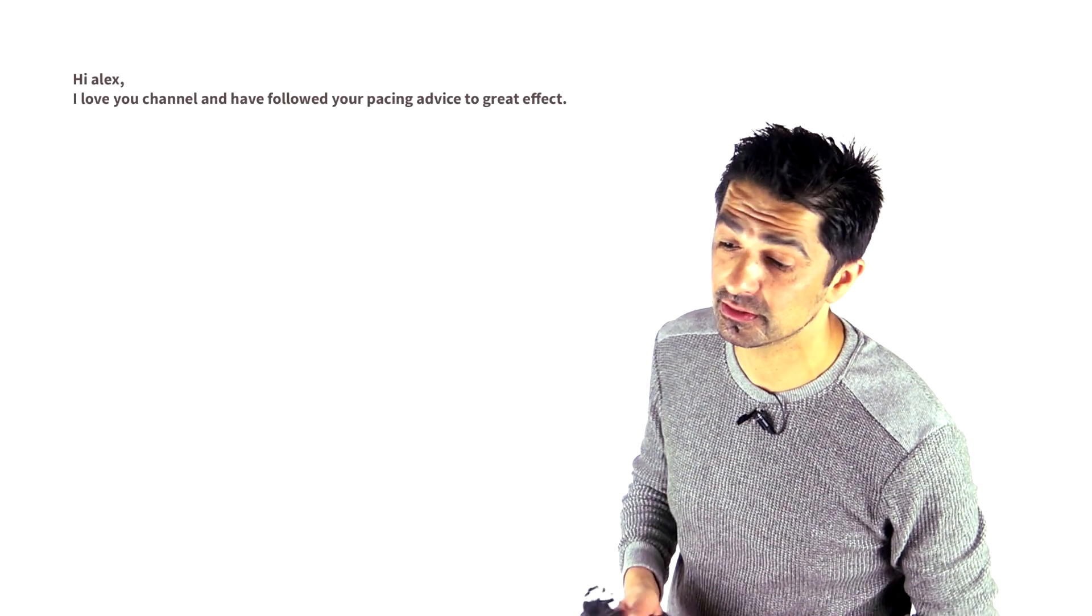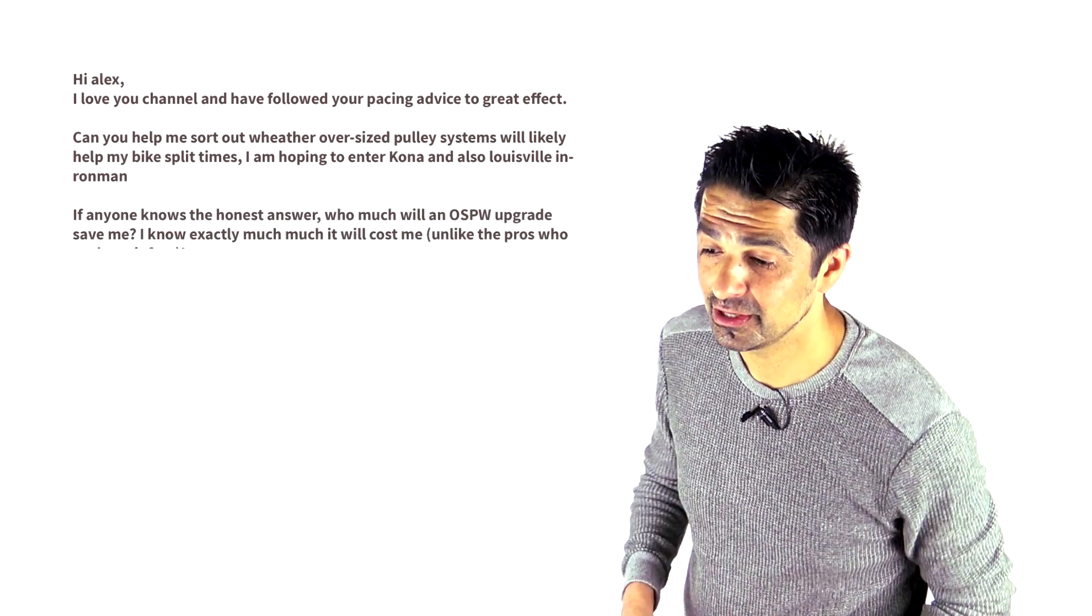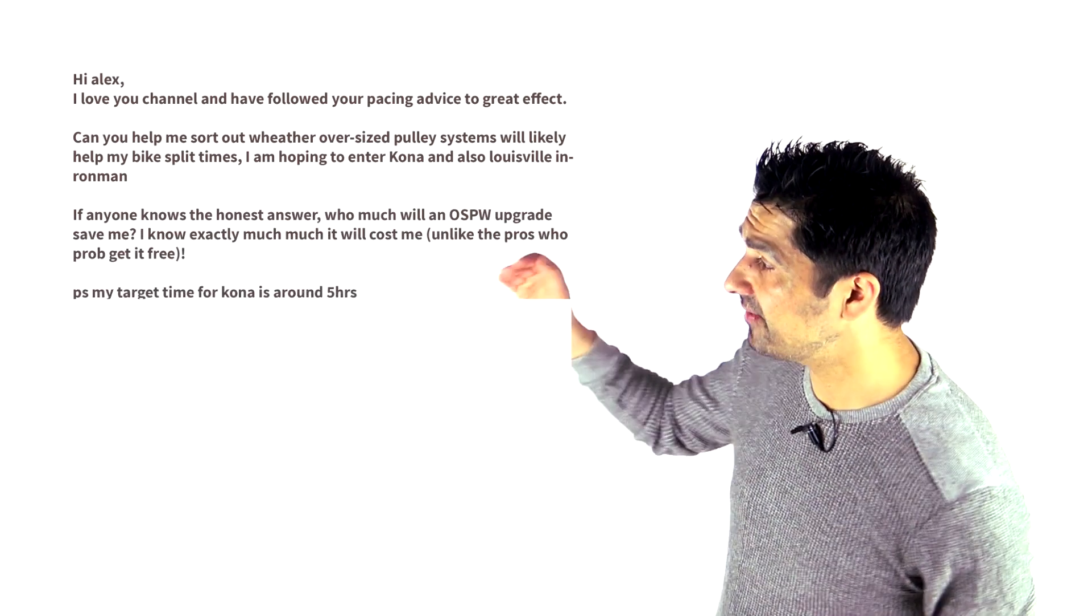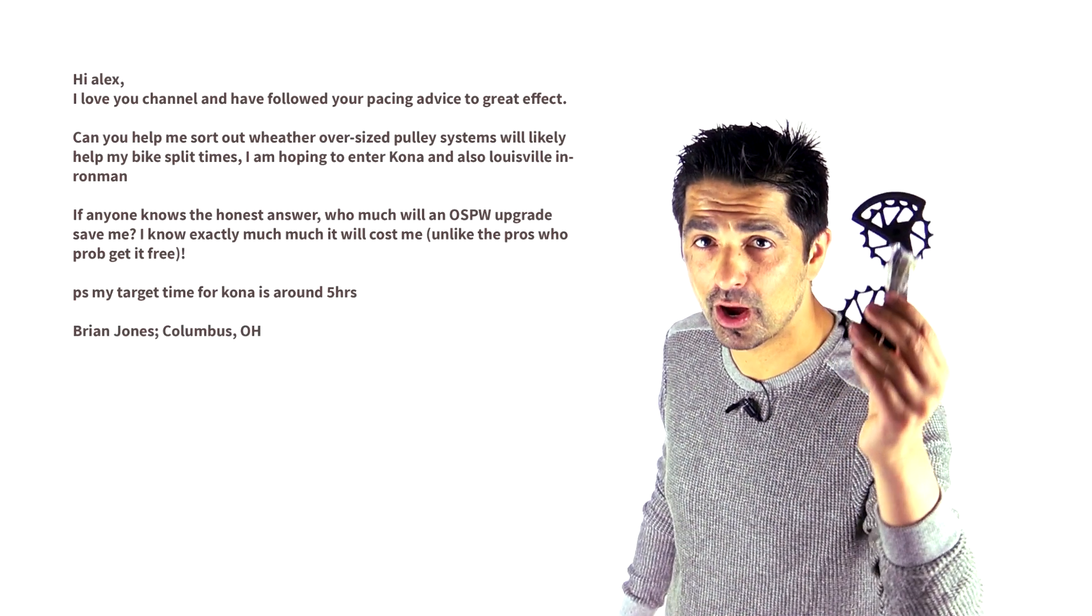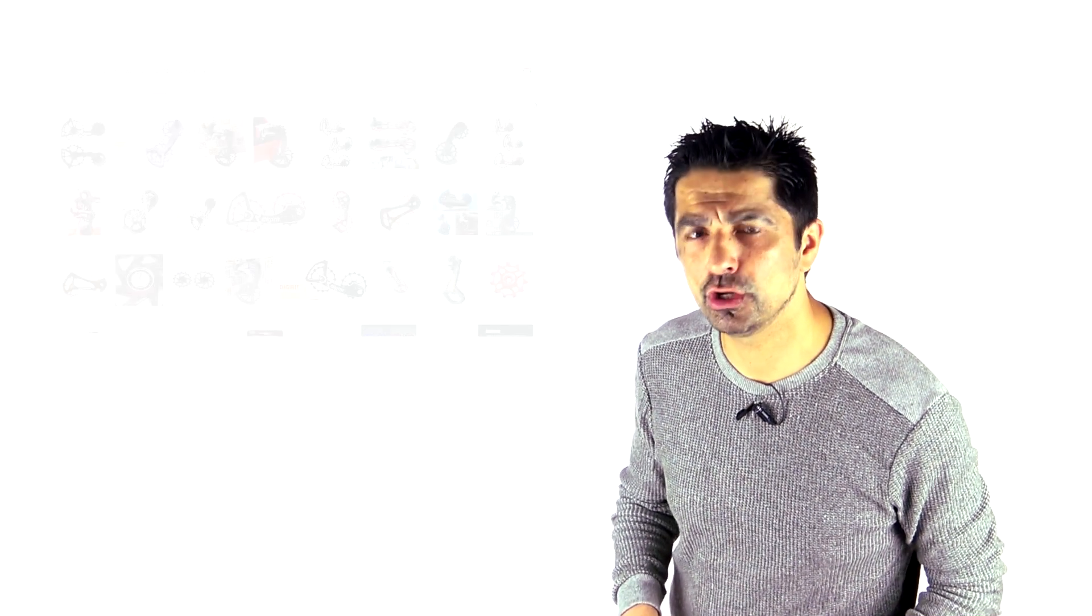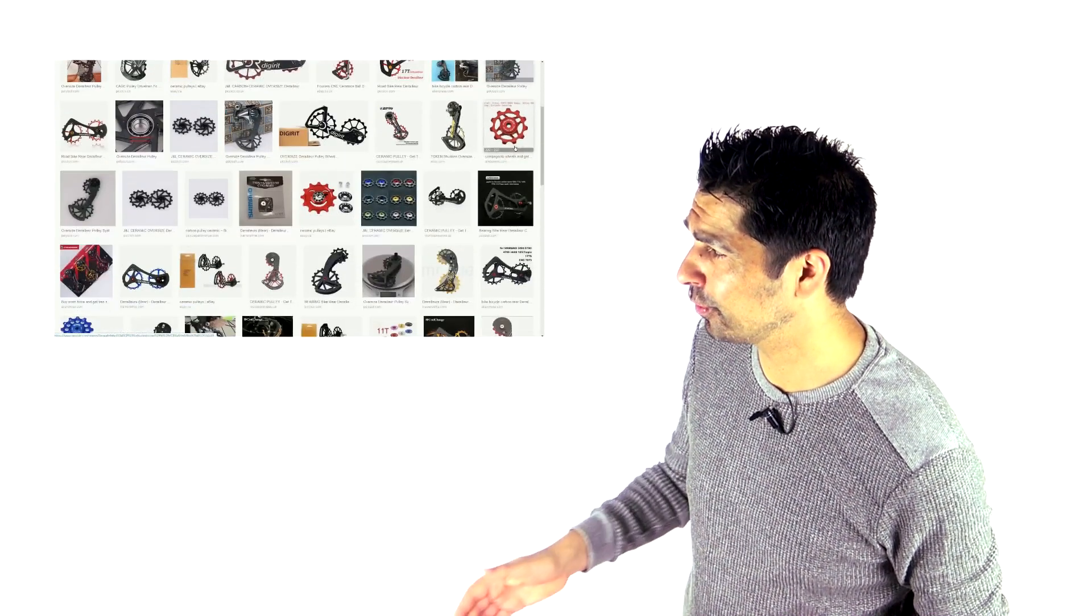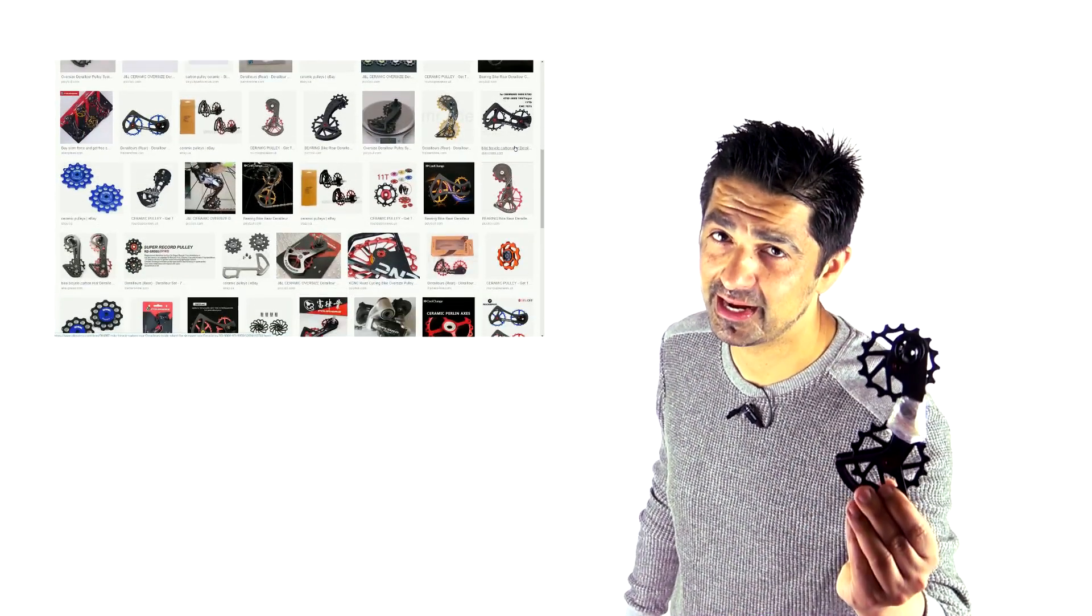Brian Jones has written to me and he said, what saving am I going to get on my bike if I race an Ironman 180 kilometers? And let's be honest, you need every saving you can get if you're going to be on your bike 180 kilometers. So he's asking, what saving am I going to get if I put an OSPW on my bike, ride 180k versus without? He's planning to do Louisville and Kona. A little spoiler, if you can't be bothered to listen all the way through this video, it's going to be a disappointment, guys.